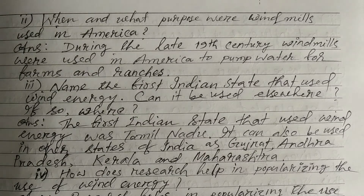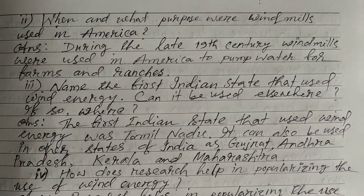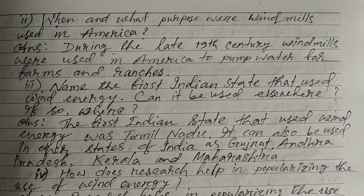Question 2: When and for what purpose were windmills used in America? Answer: During the late 19th century, windmills were used in America to pump water for farms and ranches.